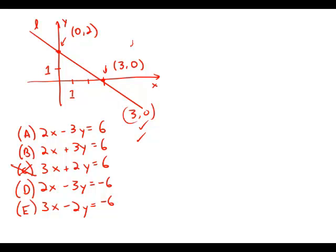2 times 3 does not equal negative 6, so that's out. And 3 times 3 is not negative 6, so that's out also. So the only possibilities that work for the point (3, 0) are A and B.